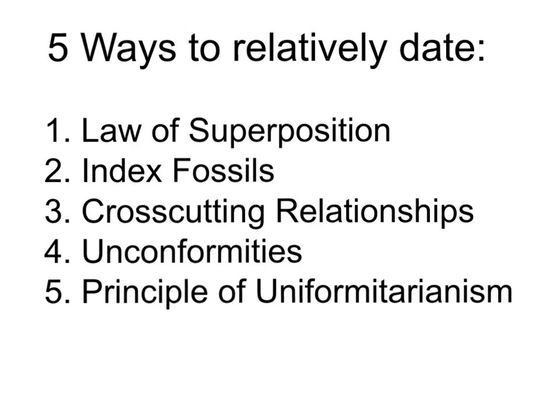There are five ways that geologists relatively date rock layers and the stuff found in them: the law of superposition, index fossils, cross-cutting relationships, unconformities, and the principle of uniformitarianism. We're going to talk about each of those in this video.